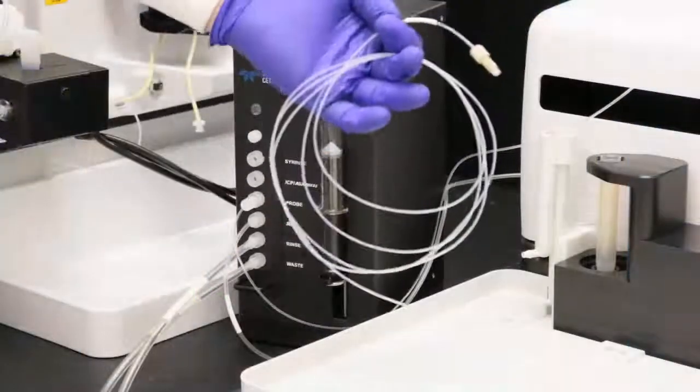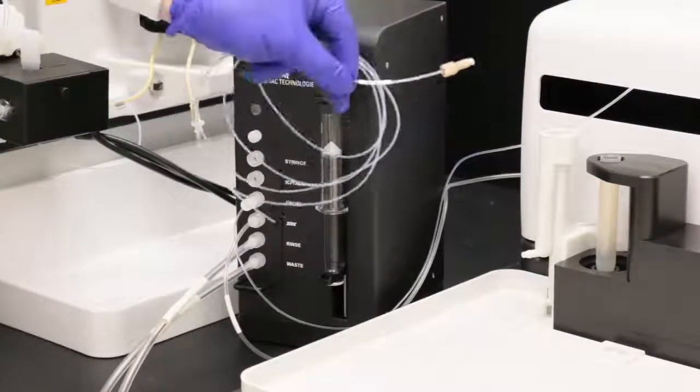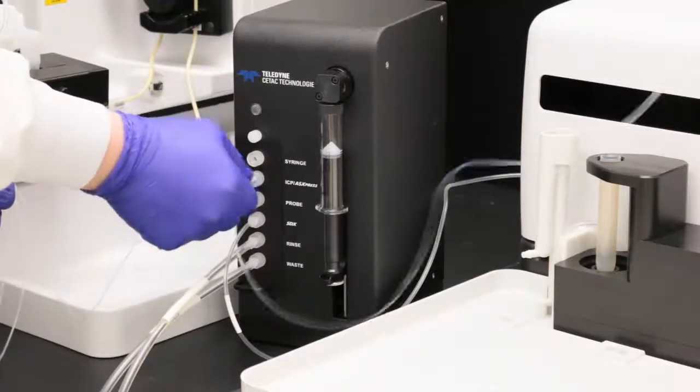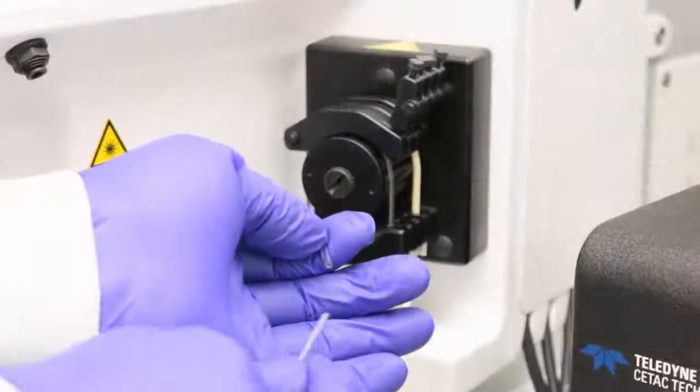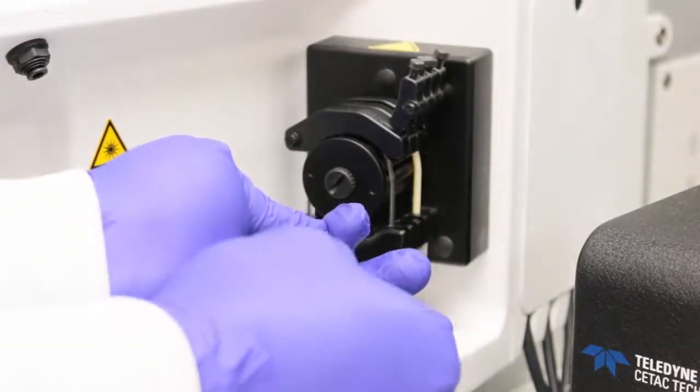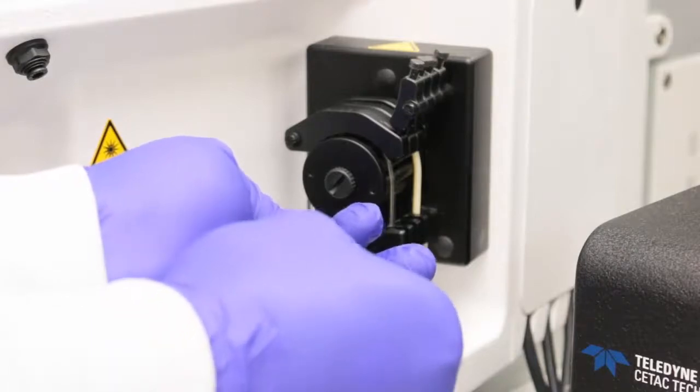Connect the ICP tube to the ICP-AS Express port. Connect the other end of the ICP tube to the sample uptake connector on the peristaltic pump of the ICP-MS or other instrument. Keep this line as short as possible.